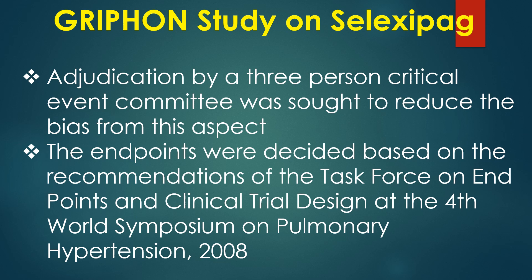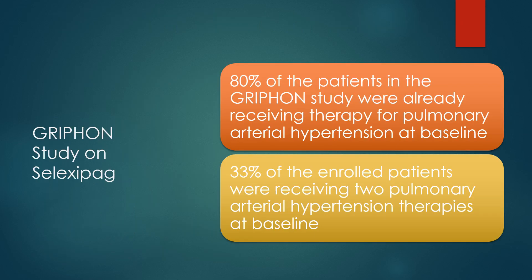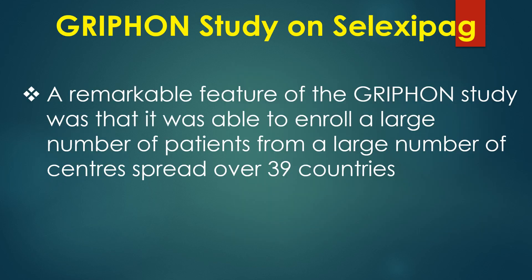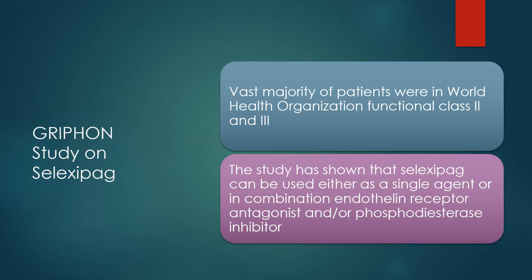The endpoints were decided based on recommendations of the Task Force on Endpoints and Clinical Trial Design at the 4th World Symposium on Pulmonary Hypertension 2008. 80% of patients in the GRIPHON study were already receiving therapy for pulmonary hypertension at baseline, and 33% were receiving two PAH therapies. A remarkable feature was enrollment of a large number of patients from 39 countries. The vast majority were in WHO functional class 2 and 3. The study demonstrated that selexipag can be used as a single agent or in combination with endothelin receptor antagonist and/or phosphodiesterase inhibitor.